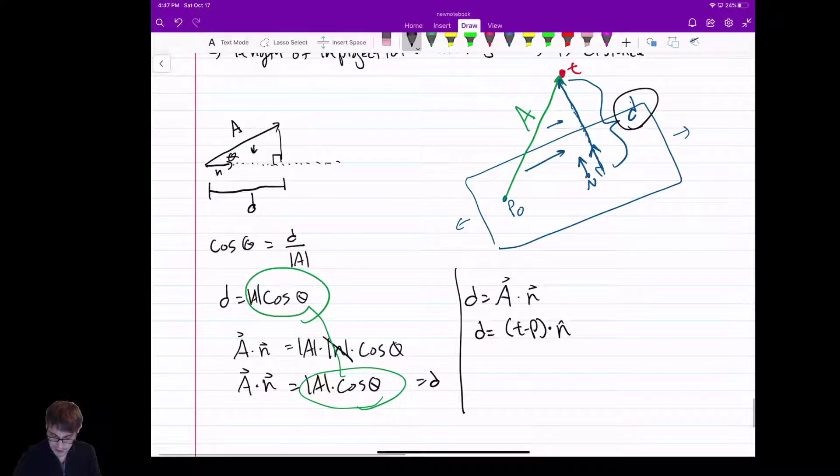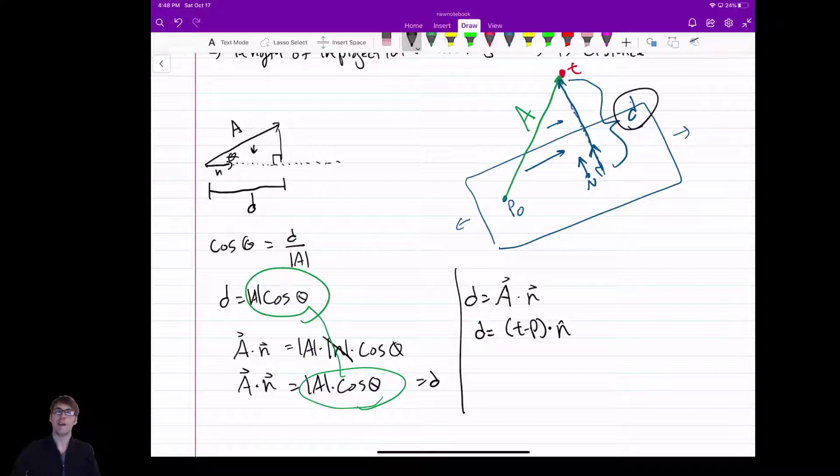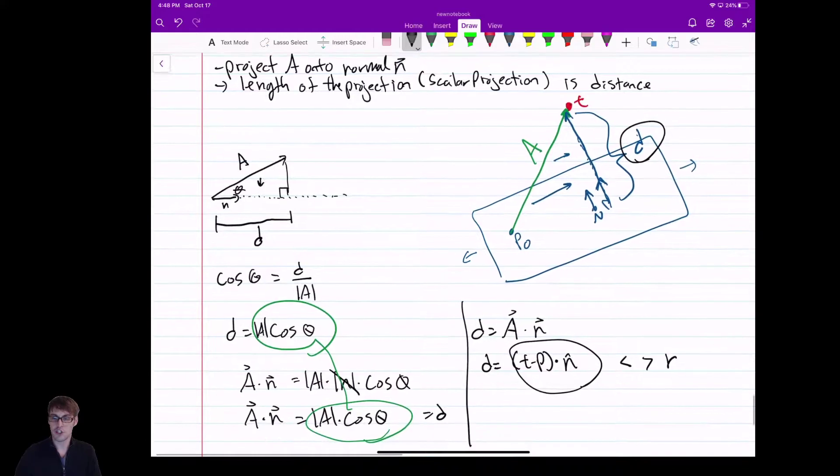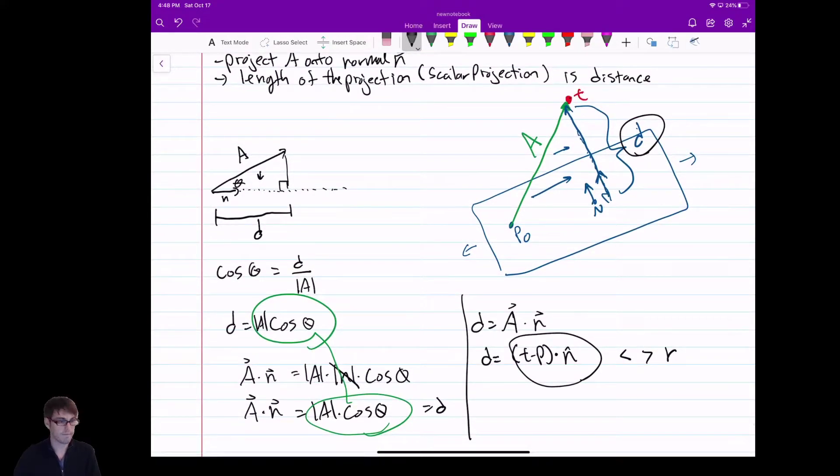So if we want to test whether our sphere is intersecting or inside the plane or outside the plane, we just compare this result against the radius of the sphere, and we're done. So really simple to get the distance from a point to a plane. We just need a dot product and a subtraction.